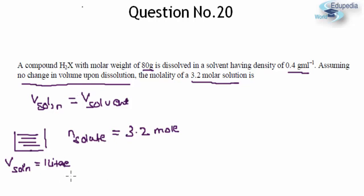Now further this 1 liter can also be considered as the volume of the solvent. Why? Because there is no change in volume upon dissolution. So V_solvent can also be considered as 1 liter and that basically means 1000 milliliters.